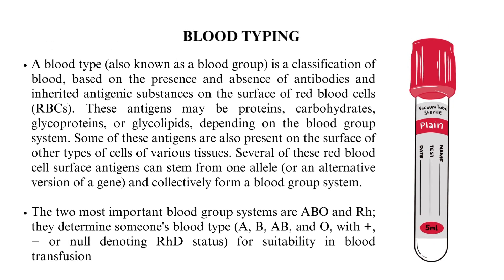A blood type, also known as a blood group, is a classification of blood based on the presence and absence of antibodies and inherited antigenic substances on the surface of red blood cells. These antigens may be proteins, carbohydrates, glycoproteins, or glycolipids, depending on the blood group system.